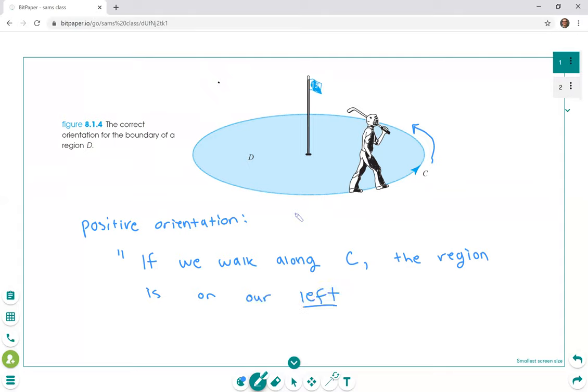Okay, as opposed to being on our right of course. So this little guy here on the golf course as he walks along C, D is on his left so that's good. So some particularly imaginative students might think, well doesn't that depend on what is up and what is down? Right, if this little golf guy instead was walking upside down on the curve, then you think from his perspective the region would now be on his right instead of his left. Okay so basically how we fix that is, don't walk upside down.